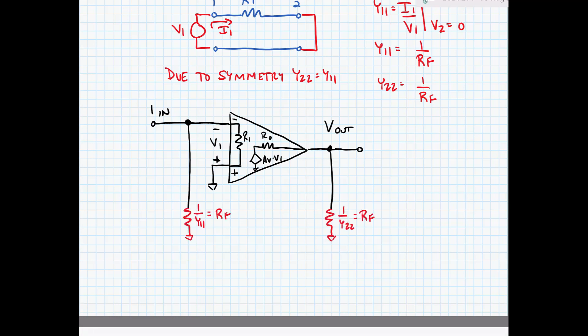Here I've placed one divided by Y11 at the input, which is equal to RF, and I've replaced the feedback connection at the output with one divided by Y22, which was also equal to RF.